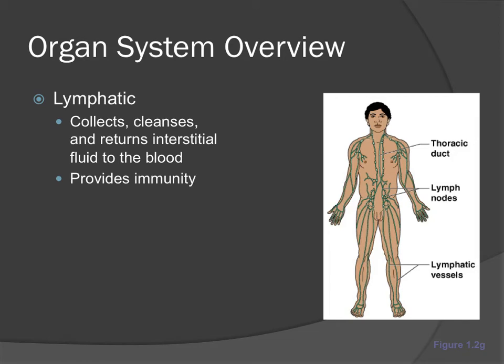The lymphatic system collects, cleanses, and returns interstitial fluid to the blood, and it provides our immunity. In the chapter on the lymphatic system, we'll discuss immunity and how we keep our body safe and healthy. We have passive and active immunity, which comes from forms such as immunizations or being exposed to something and building up an immunity from that exposure.